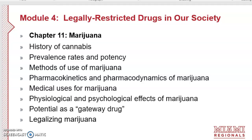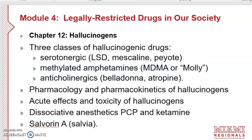We will address issues around the legalization of marijuana, pros and cons. Finally, we'll talk about three classes of hallucinogenic drugs: those that work through the serotonin system — such as LSD, mescaline, and peyote — and the methylated amphetamines, an example being MDMA or ecstasy or molly. Personally, I classify MDMA as a stimulant because 'amphetamine' is literally in its name — MDMA stands for methylenedioxymethamphetamine — but the textbook places it in the hallucinogens.